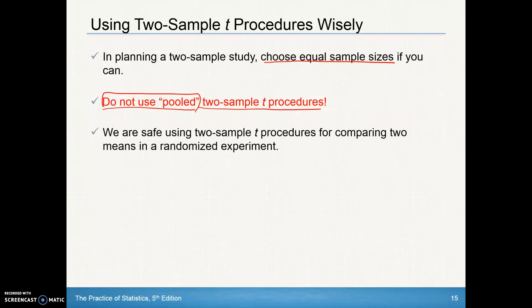We are safe using two-sample t procedures for comparing two means in a randomized experiment. If we don't have random selection, as long as we have random allocation of the experiment, we should be okay.